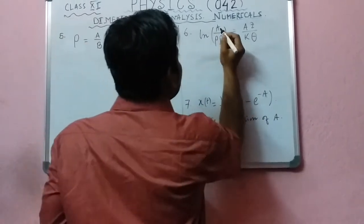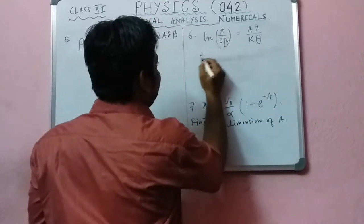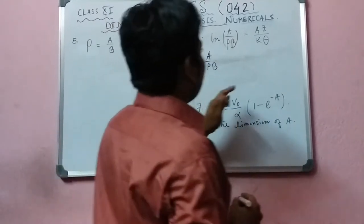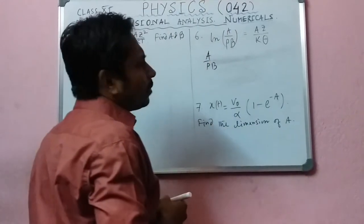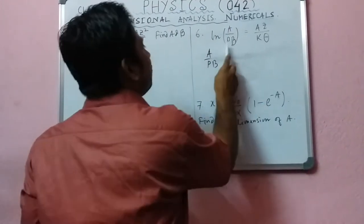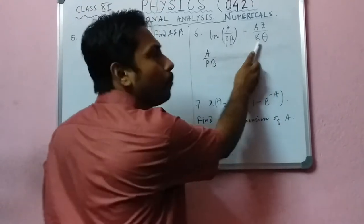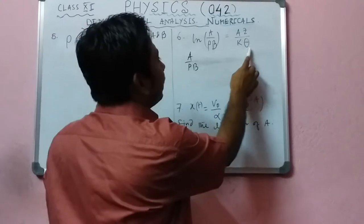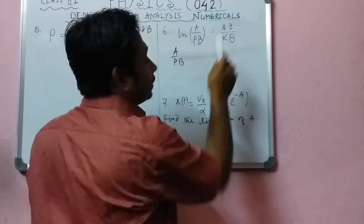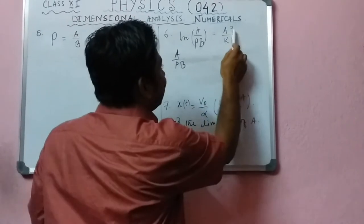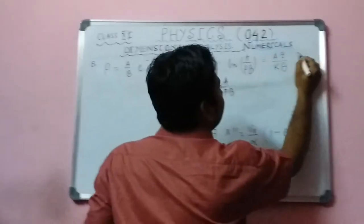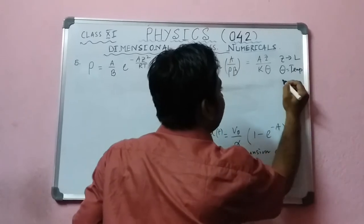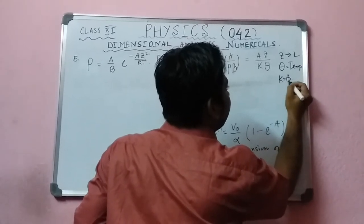In this question, p means pressure, k means Boltzmann constant, capital theta means absolute temperature, and z means length.